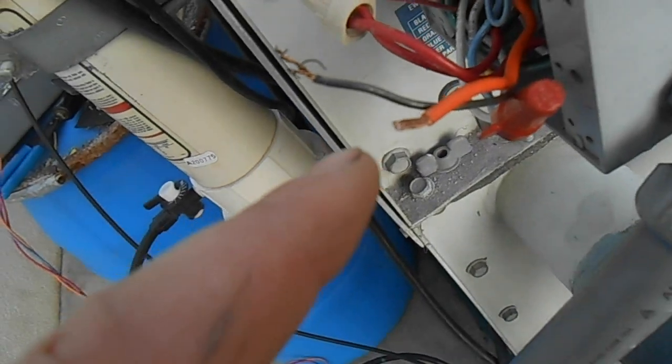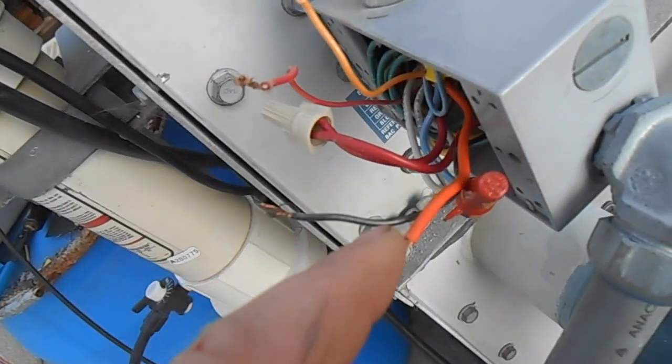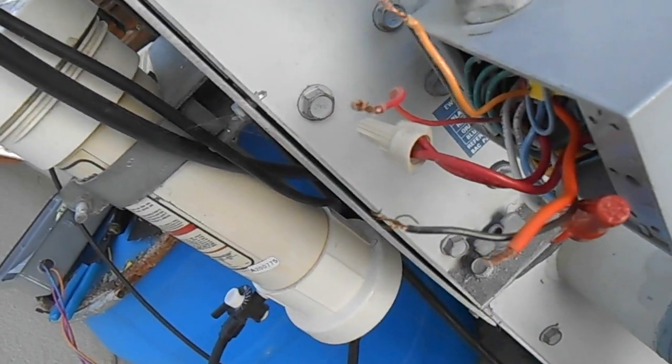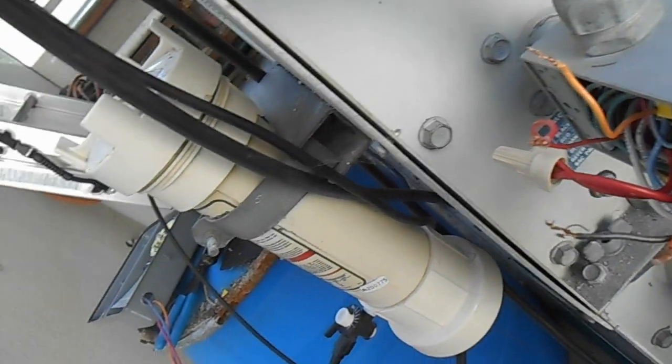This is the wire we're going to hook - orange to orange so it makes sense, red to red that's hot, that's the makeup valve. Blue inside of the switch and blue - I'm going to hook the neutral. That's going to work.